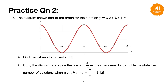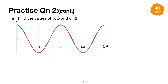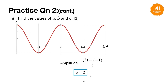Question 2: the graph is already drawn — work backwards. The general equation is y = a·cos(bx) + c. Find a, b, c. For amplitude a: the maximum is 3 and minimum is minus 1. Amplitude = (max − min) / 2 = (3 − (−1)) / 2 = 4/2 = 2. So a = 2.